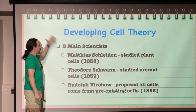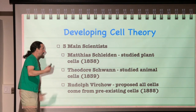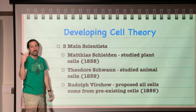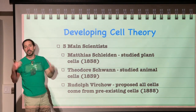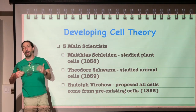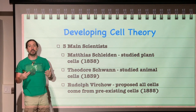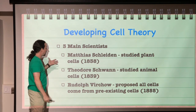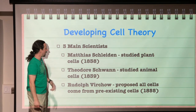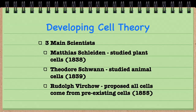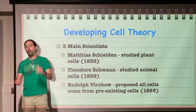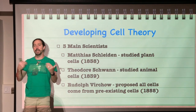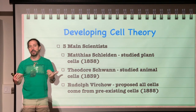When it comes to cell theory, it was designed and set up by three different scientists: Matthias Schleiden, Theodor Schwann, and Rudolf Virchow. The dates behind them show you about when cell theory came to be.